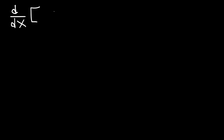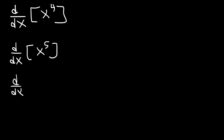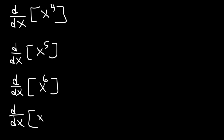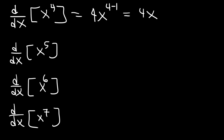Now for the sake of practice, go ahead and try these. The notation d/dx simply means you're differentiating with respect to x. Feel free to pause the video as you work on these examples. Using the power rule — n times x raised to the n minus 1 — the derivative of x to the fourth is 4x raised to the 4 minus 1, which is 4x to the third power.